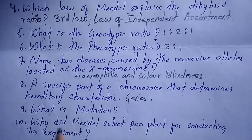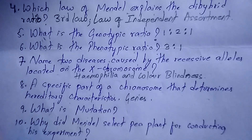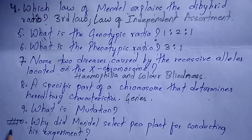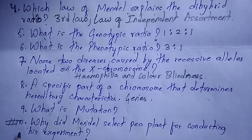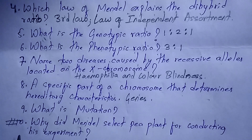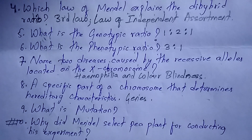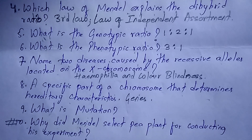Next question: why did Mendel select the pea plant for conducting his experiment? This is a very important question that is repeated most often in board exams. The answer is: pea plants have several varieties; pea plants bear bisexual flowers, meaning each flower has both male and female parts; and there is self-pollination and self-fertilization in pea plants, due to which it is easy to get pure lines for several generations.